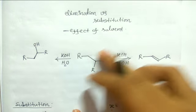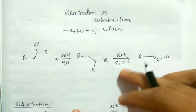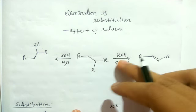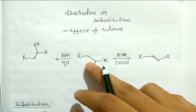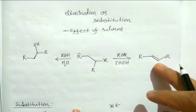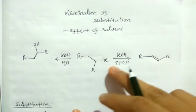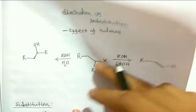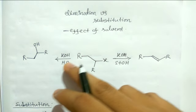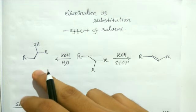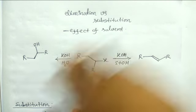For example, you know from your standard chemistry that treatment of ethanolic KOH with alkyl halide gives alkene which is an elimination product, whereas when you treat the same alkyl halide with aqueous KOH then you get alcohol which is a substitution product.